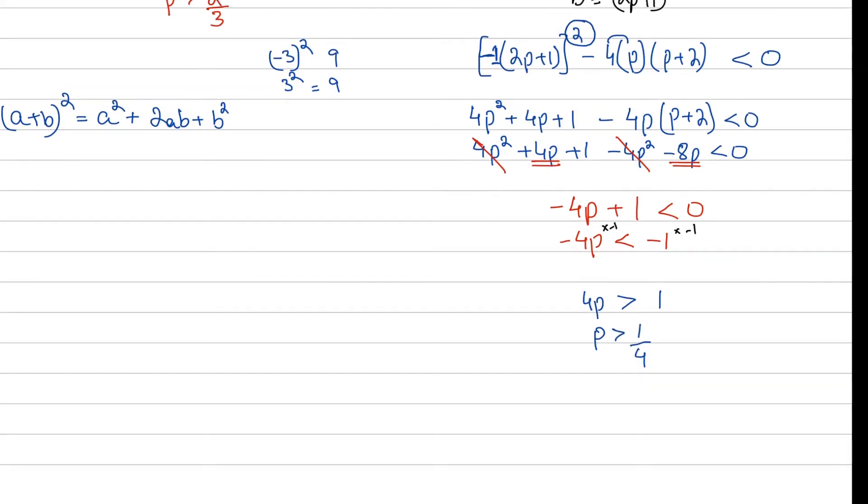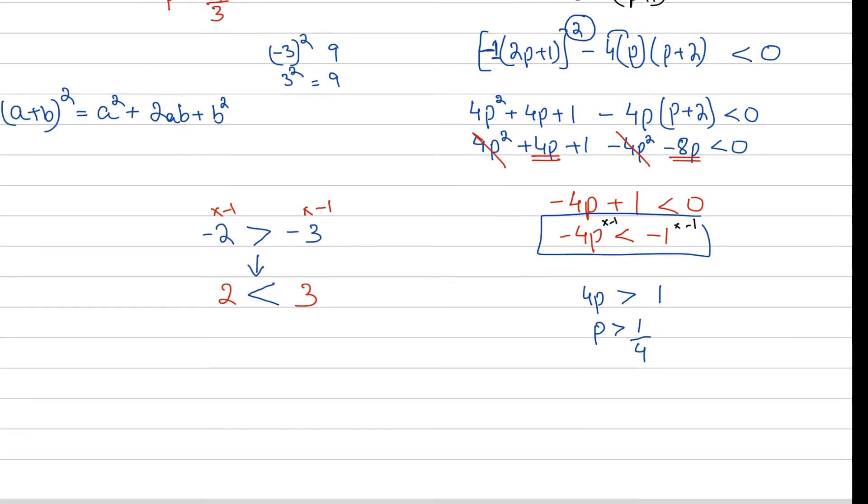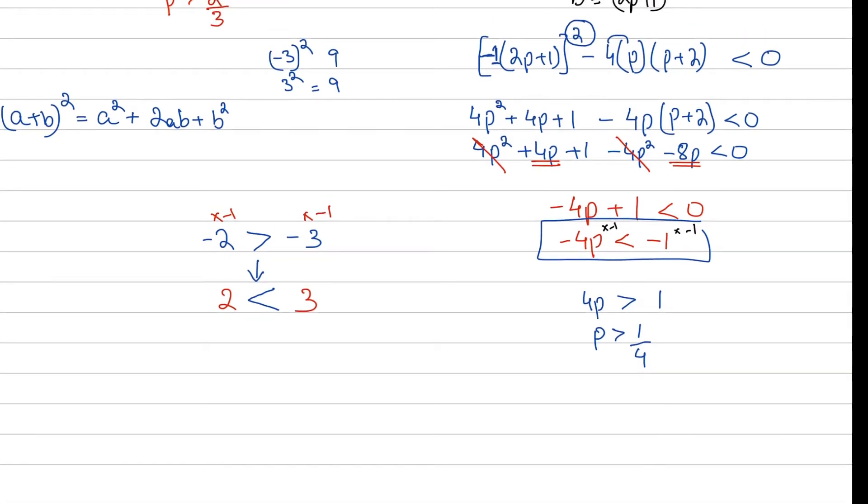Now I will tell you why the sign flips. Let's say you have minus 2 and you have minus 3. Because minus 2 is negative, minus 2 is greater than minus 3. For example, if I take minus sign out by multiplying by minus 1, this is 2 and this is 3. Now if you think, 2 is not greater than 3. If they're positive, obviously 3 is greater than 2. Note that the inequality sign flips.